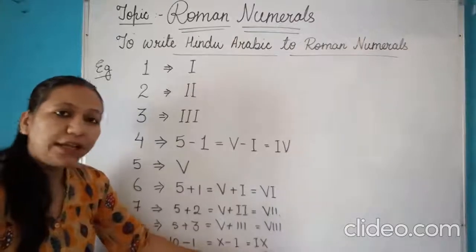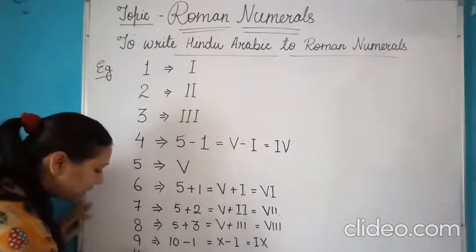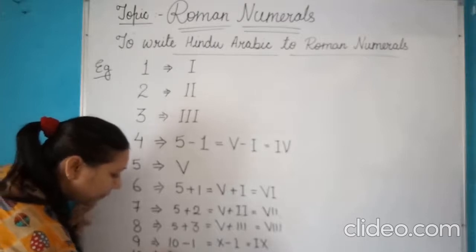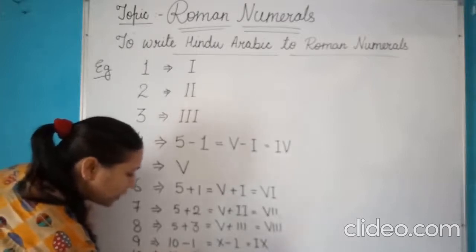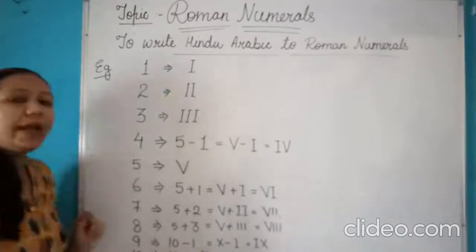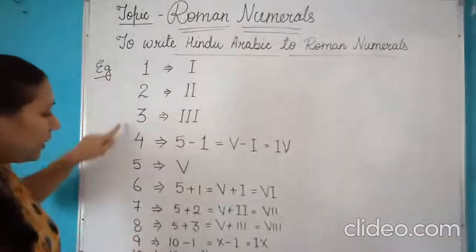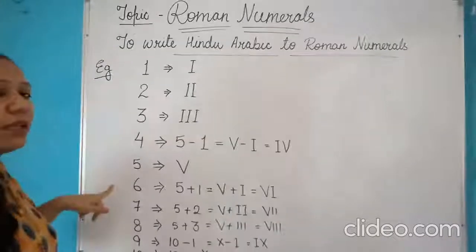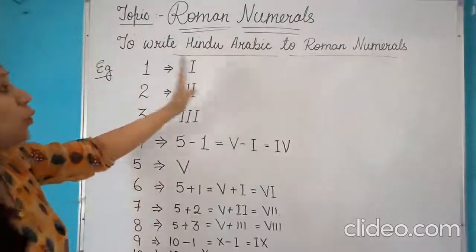Now last, the symbol of 10 is 10 as it is. So the symbol for 10 is an X. This is how you can write the simple numbers in the Roman format.